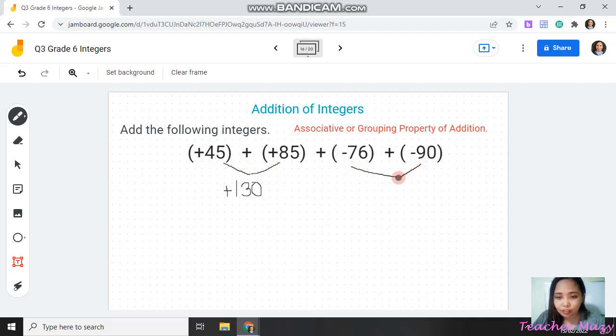Next is integers with negative signs. That is 76 plus 90 and that is equal to 166 and the sign is negative since both of them are negative.